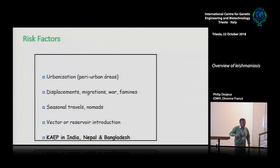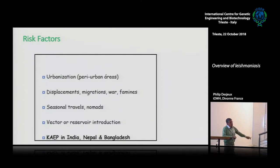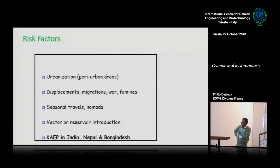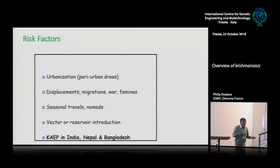Seasonal travel is normal. People from Sudan know the nomadic people who move from the south to the east of Sudan with their cattle to find grass. In some places they get Leishmaniasis. Introduction of the vector or reservoir — when dogs move from one place to another with people, you can reach a place where transmission starts.